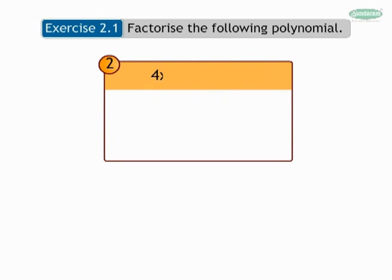Problem 2: 4x squared minus 11x plus 6. Here the question is in the form of a trinomial. As per our flowchart, let's see if anything can be taken in common.